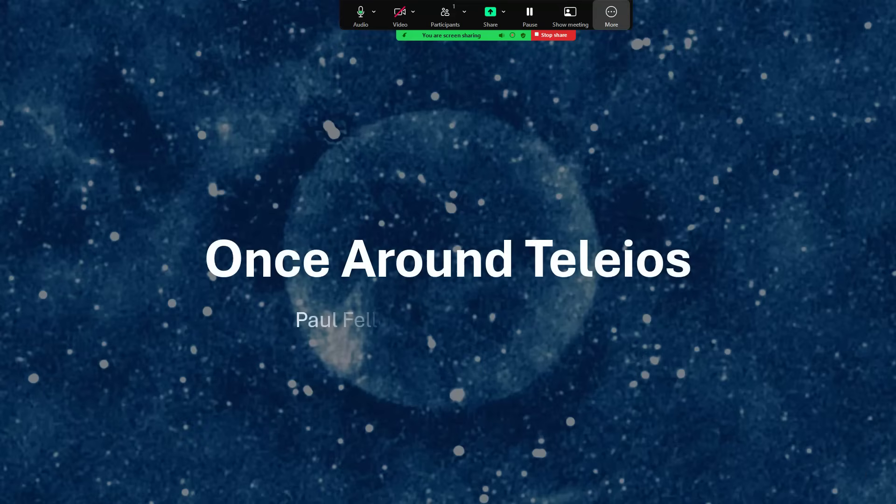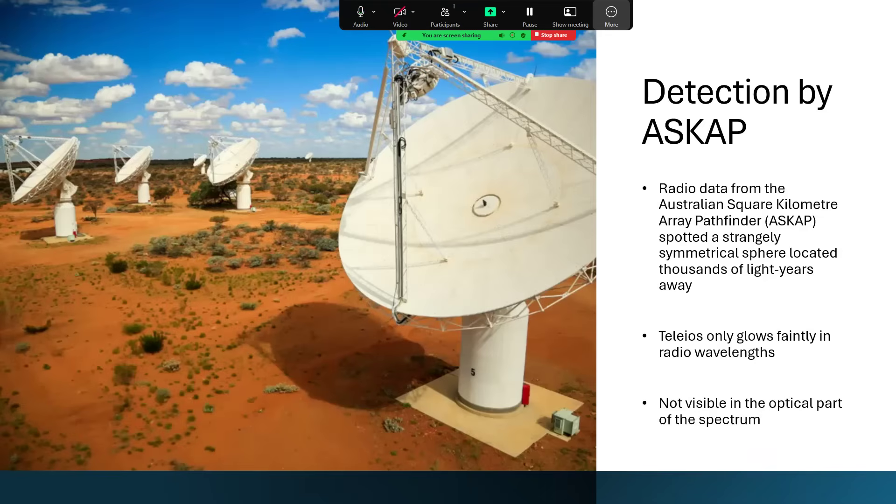Once around Teleios. This goes back to a detection by the ASKAP array. This ASKAP array is a radio telescope in the Australian desert, and the acronym—you have to have a good acronym these days for any piece of equipment—stands for the Australian Square Kilometre Array Pathfinder. But ASKAP, so much easier to say. And it spotted a strangely symmetrical spherical object thousands of light years away in the sky, glowing in the radio part of the spectrum but with no optical counterpart when the initial follow-up was done.